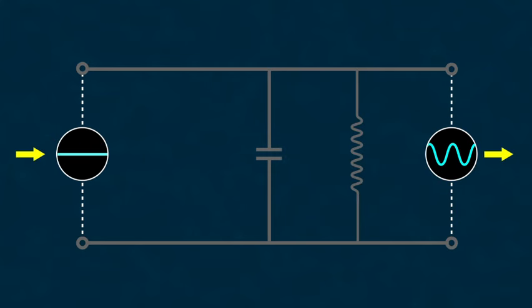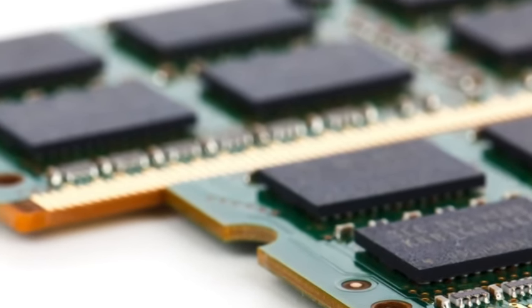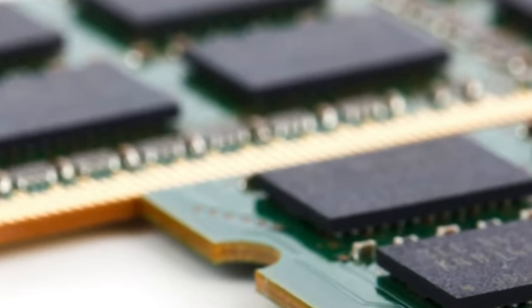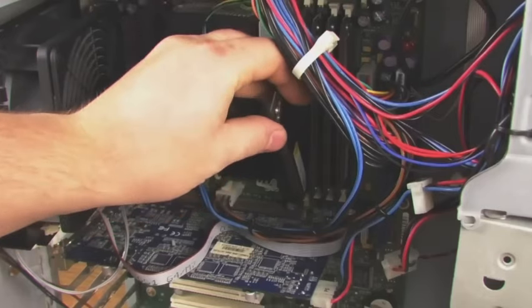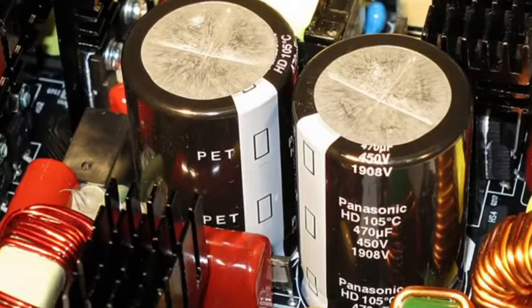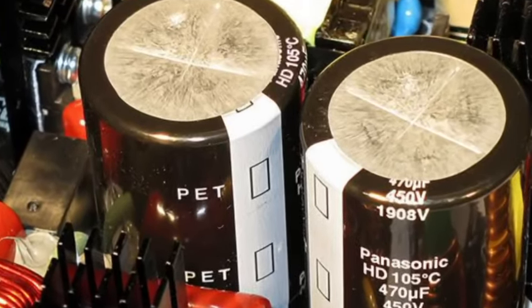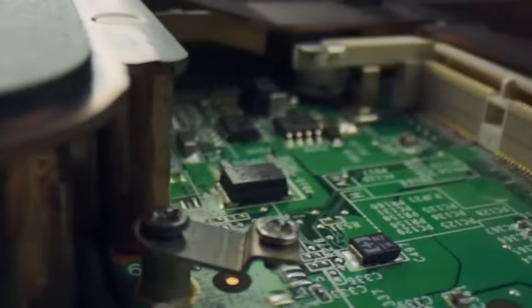The reverse task — converting direct current to alternating current — is also solved using capacitors in combination with inductive coils. And of course, capacitors are the key element of the memory cells in modern computer DRAM. More details on how this works were discussed in one of our previous videos. In general, capacitors are the second most common element in electrical and electronic circuits, and I hope that thanks to this video, you will be able to form an understanding of why and how these important devices fulfill the tasks set before them from a physical point of view.